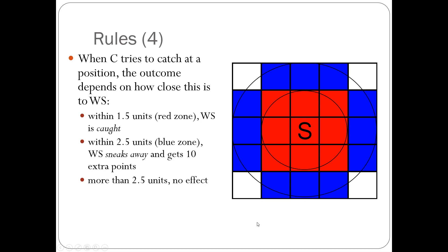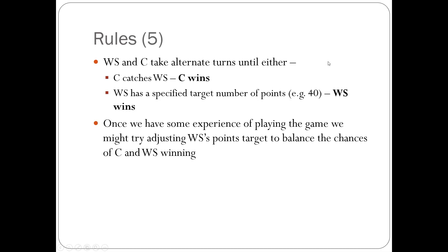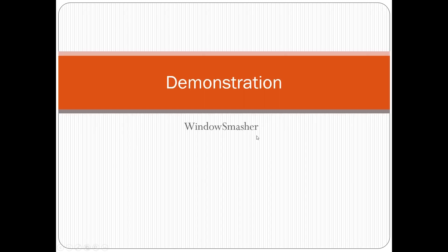You keep going through that cycle, taking alternate turns. Either you catch the window smasher — you win — or the window smasher reaches a target number of points, which could be 40 or 50 — you might be able to set it yourself — in which case the window smasher wins. You should download the game, have a go yourself, and examine the code to get an idea of how it works.